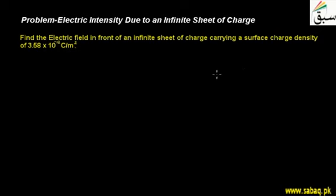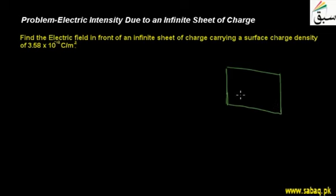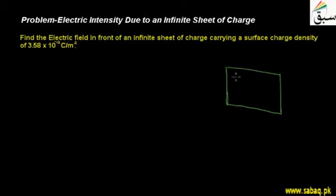We have a sheet of charge — an infinite sheet. We take it as infinite because it has no visible starting point or ending point. We are taking a general case with two dimensions, which will handle every shape. This sheet is made from a material from which electrons have been removed, which is why it has positive charge.